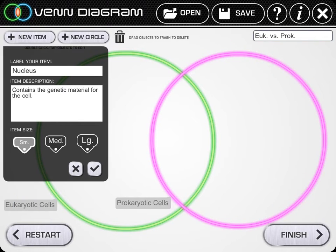The next thing you want to do is start to put in the characteristics for each cell type. You're going to click on new item and when you hit new item this box appears. We're going to put those items into the circles later by dragging them to where you want. Right now we're just going to come up with the items.